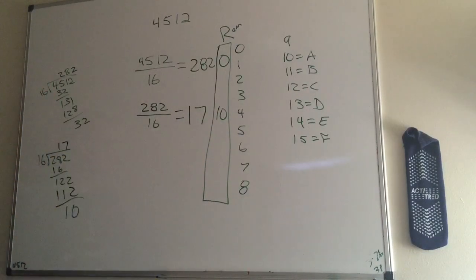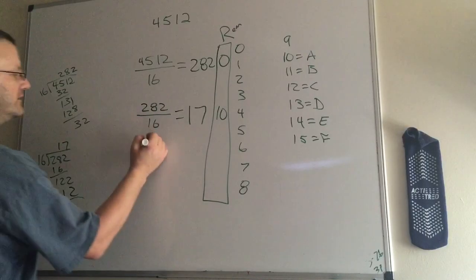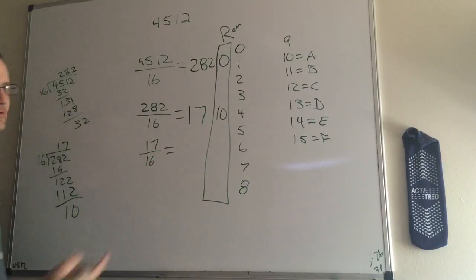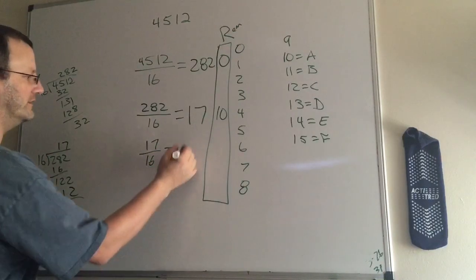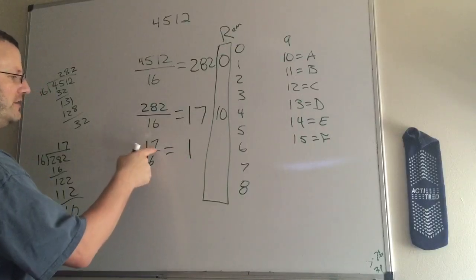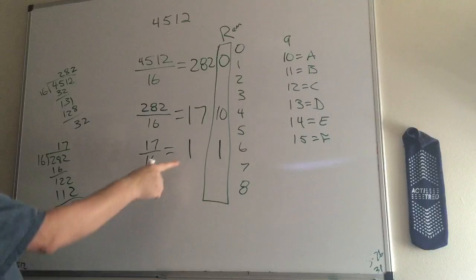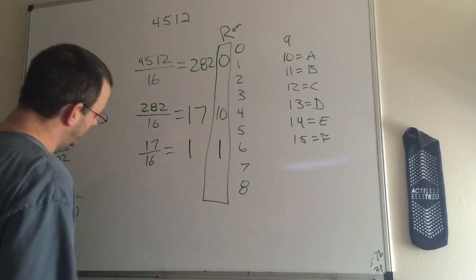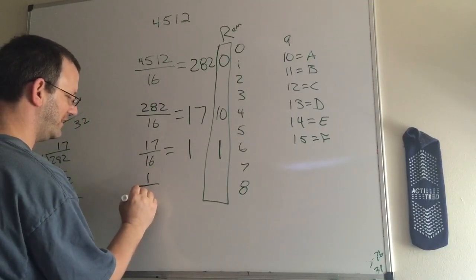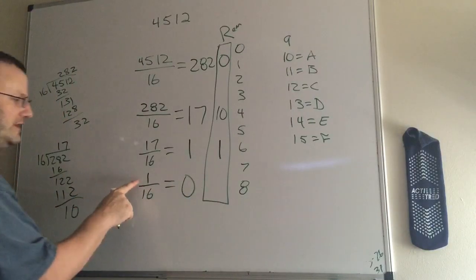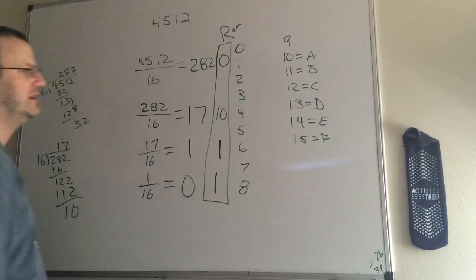Notice our whole number's not down to zero yet. So we have to keep on dividing. 17 divided by 16. Now, this you can do in your head. You know it's going to be 1, and you know you're going to have a remainder of 1 left over. But that's still not zero for a whole number. So, yes, we have to do it again. 1 divided by 16 equals 0. Now we have 0, but we still have the remainder of 1. From here, it gets really easy.